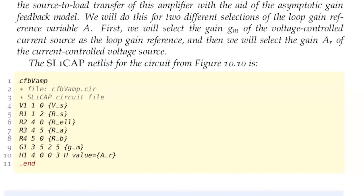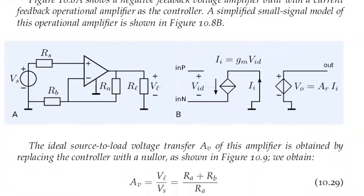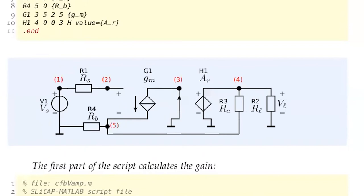This circuit is the starting point for evaluating the loop gain and the asymptotic gain. The ideal gain we already computed — expression 10.29 — is (RA + RB) / RA. Now with the operational amplifier in the circuit, we want to know the asymptotic gain, the loop gain, and how to write the source-to-load transfer using the asymptotic gain feedback model. We have two things we can select as the loop gain reference, and that is what this topic is about.